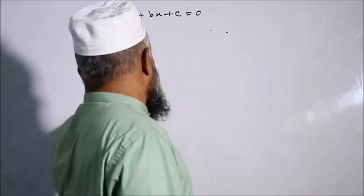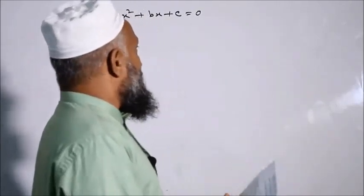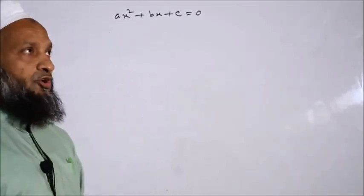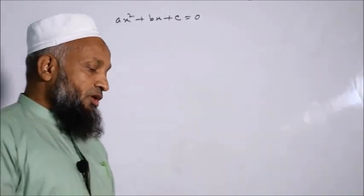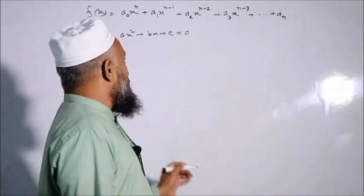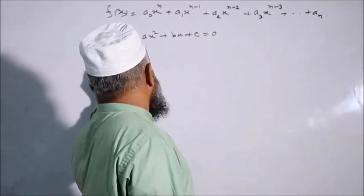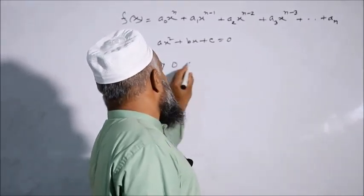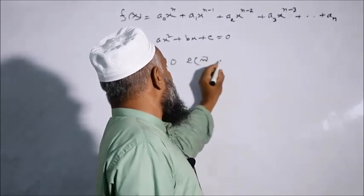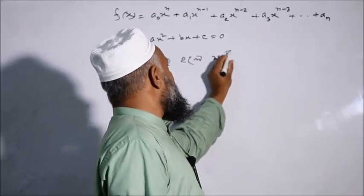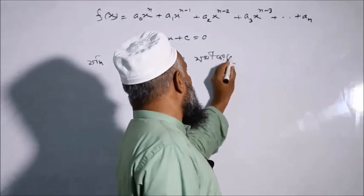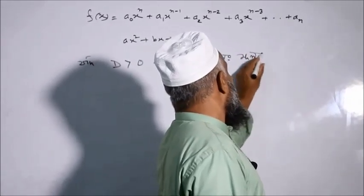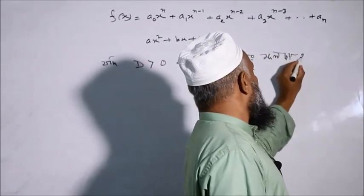The x-r meaning: the roots can be real (vastop), equal (saman), unequal (osaman), or complex (zotil/jotil). The roots may be real, and they may be equal or unequal.